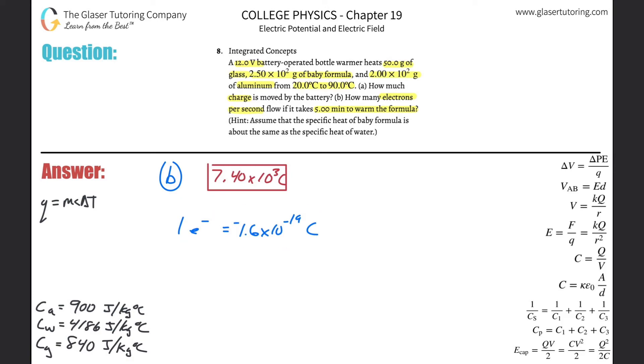So if this is the total amount of charge, and we know that each single electron has this amount of charge, how do we find the total number of electrons? It's basically a simple conversion. 7.40 times 10 to the third Coulombs, put Coulombs on the bottom, number of electrons on the top. For every one electron, it's 1.6 times 10 to the minus 19th Coulombs. We just have to do a division. Divide by 1.6 times 10 to the minus 19th, and it comes out to be about 4.62 times 10 to the 22nd electrons.